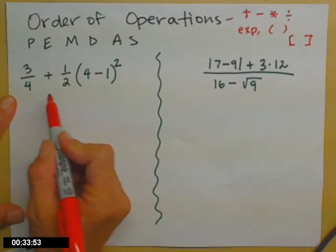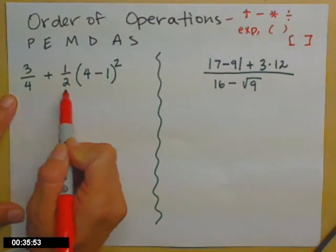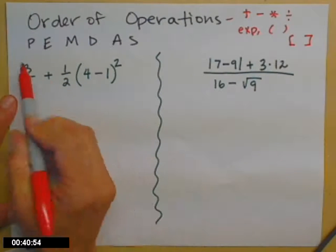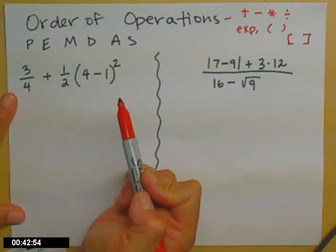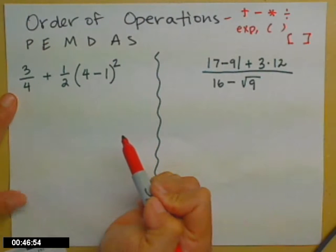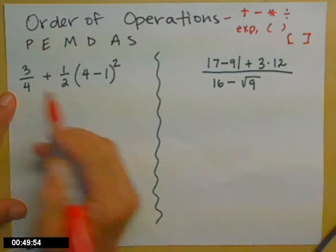So here we go. 3/4 + 1/2(4-1)². So PEMDAS says we do anything that's in parentheses first. So I do have a set of traditional parentheses there, so we'll do what's inside first: 4 minus 1.